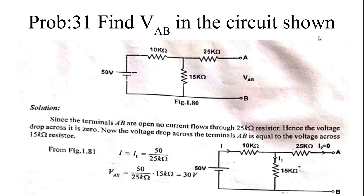Next problem: find Vab in the circuit shown. Here also you need to find Vab. There are voltage sources, so first you should find the voltage across the 15 ohm resistor, then you can find the voltage across this resistor because it is parallel with this. There is a 25 kilohm resistor here. Drawing the current paths: current I flows and separates — I1 through the 15 kilohm resistor, and another current through the 25 kilohm resistor. But the A and B terminal is open, so there will not be any current through the 25 kilohm resistor.